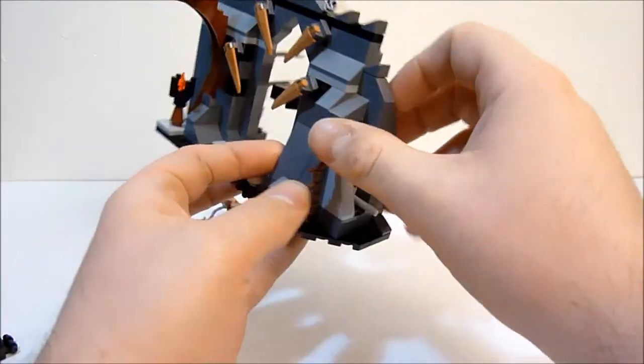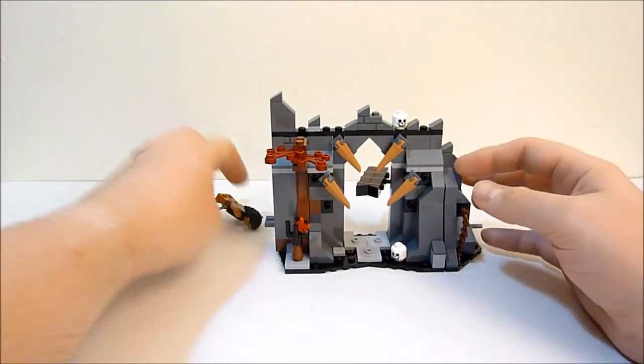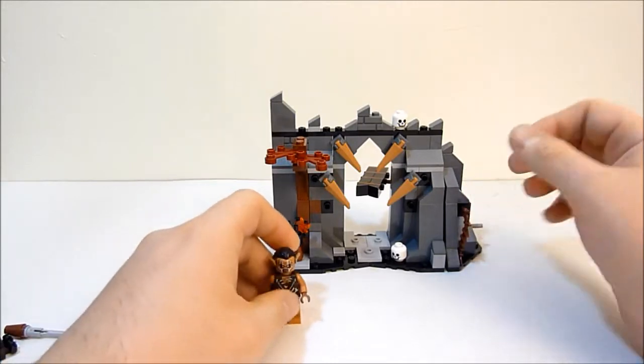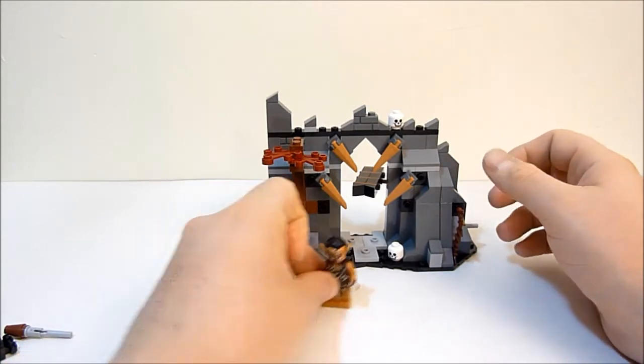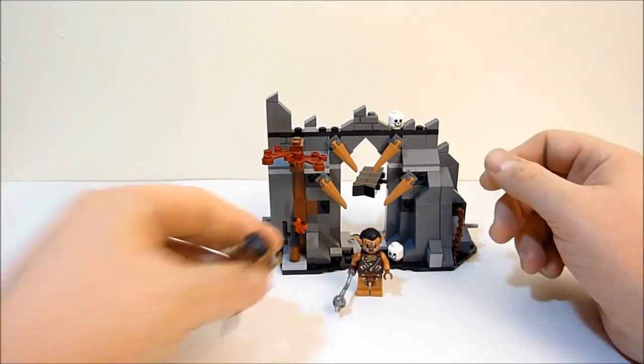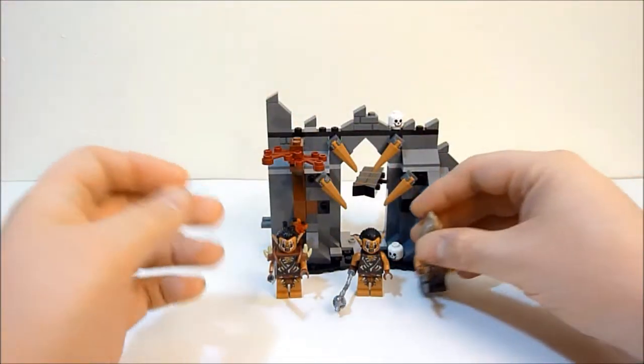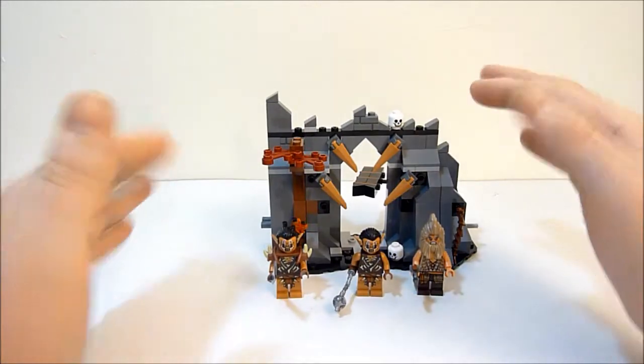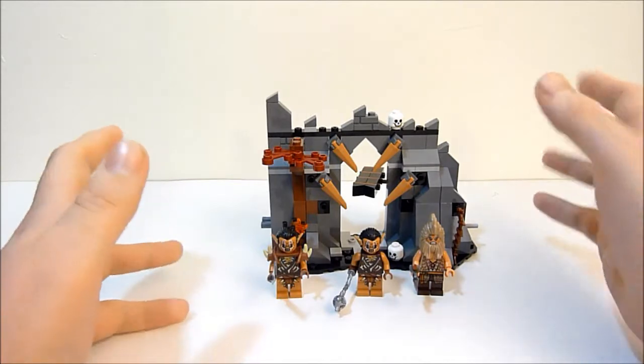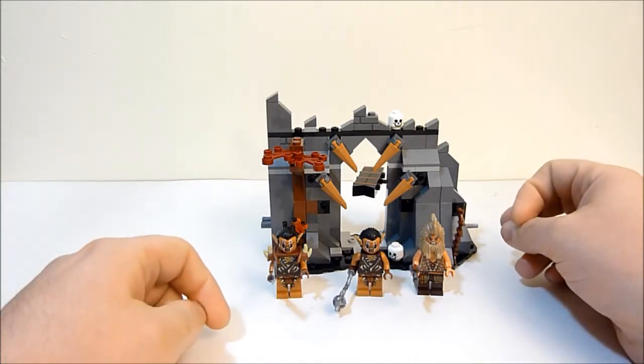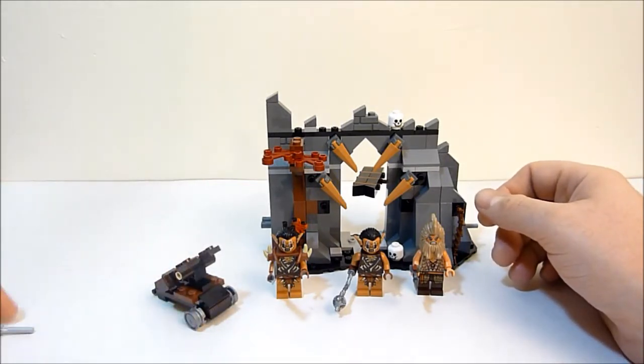But yeah, I mean, it is, it's not bad. It's the smallest of the Desolation sets. So I mean, you know, I wasn't expecting huge things out of it. And for what it is, you get some nice minifigs, which is the usual with these Lord of the Rings and Hobbit sets. The minifigures are always the main draw because they're just, they're beautifully made. The printing is always just super nice. And the accessories are really cool, too. And this one is certainly no exception.